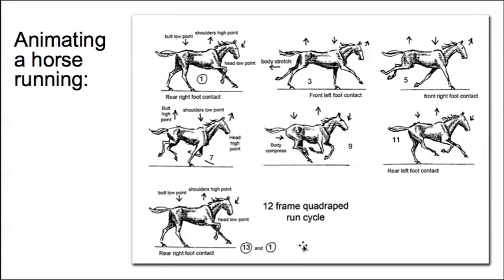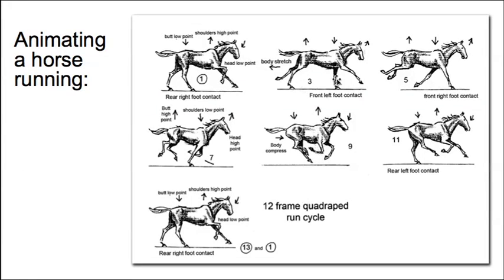I've annotated the drawing so that you've got the high point on the shoulders, the low point on the backside, and also the compressed position here at frame nine, and the stretched out position here at frame three. Remember that a horse when it runs stretches and compresses as well as moving up and down.